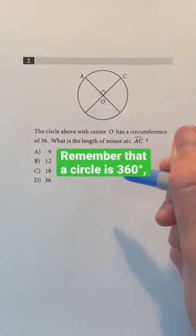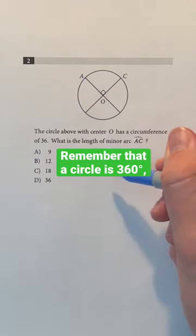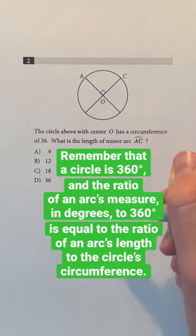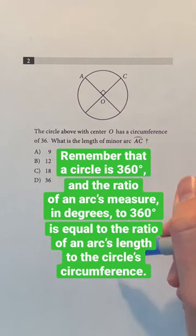Remember that a circle is 360 degrees, and the ratio of an arc's measure in degrees to 360 degrees is equal to the ratio of an arc's length to the circle's circumference.